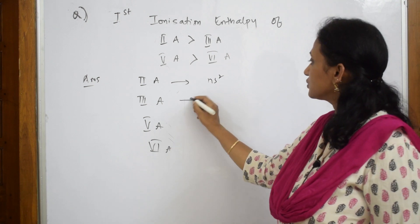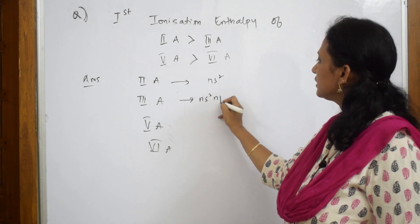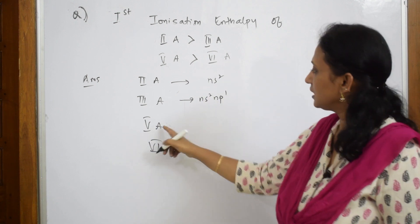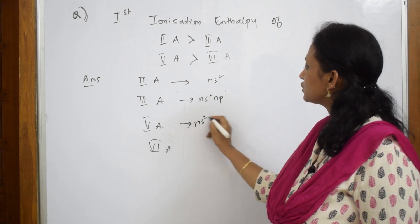3a configuration is ns2 np1, because 3a means 2 plus 1, which is 3. In 5a configuration it is ns2 and np3.